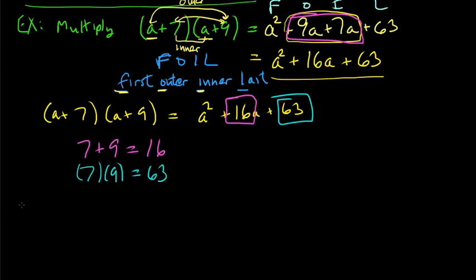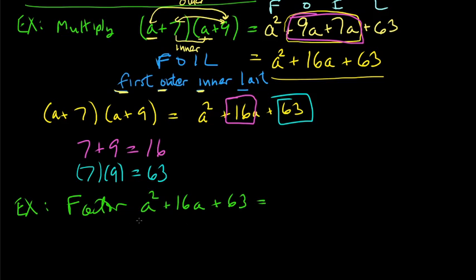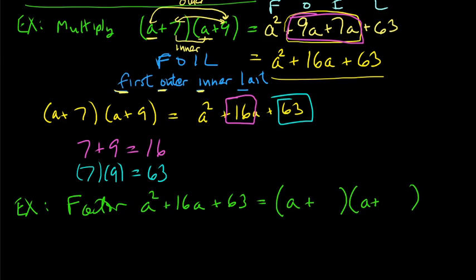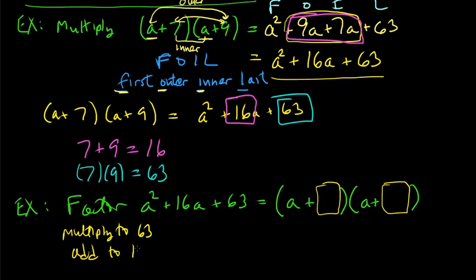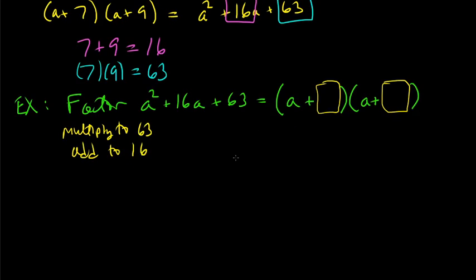So if we want to factor a² + 16a + 63, first the GCF is 1, and it's not grouping because there's only three terms. We're looking for two numbers that go in (a + ☐)(a + ☐). Those two numbers have to multiply to 63 and add to 16.